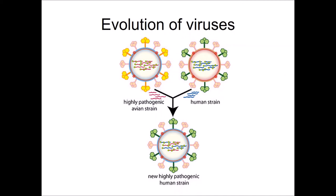In viral recombination, one strain might be highly pathogenic but usually only infects birds, while there's also a human strain that's not as pathogenic. The two strains co-infect a host cell, and as the virus gets packaged during viral replication, some RNA from each strain gets packaged into each virus. This can result in a new strain — in this case, a virus that can infect humans but is also highly pathogenic.